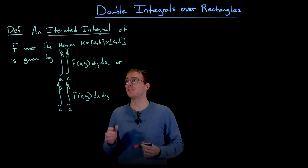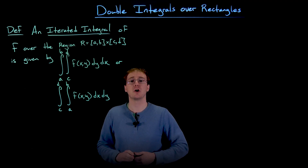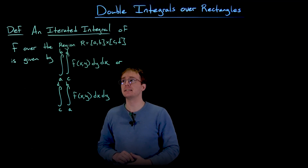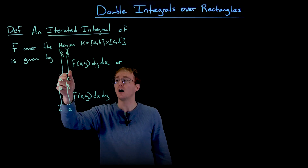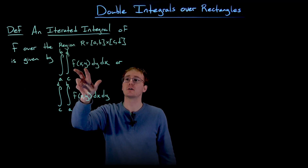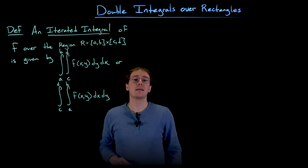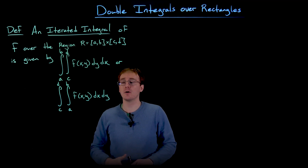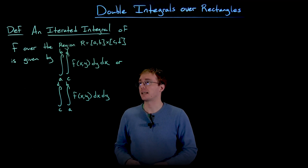An iterated integral of our function f over our rectangular region R, which has x go from a to b and y go from c to d, is given by the integral from a to b of the integral from c to d of our function f, where we first integrate with respect to y and then with respect to x. The other version is just switching the roles of x and y.